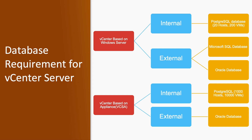Database requirement for vCenter server: vCenter on Windows server has an internal database, or you can also use an external database. The internal database is PostgreSQL, which supports 20 hosts and 200 virtual machines. If you are using an external database, you can use Microsoft SQL or Oracle. For vCenter on Appliance-based, the internal PostgreSQL database supports 1000 hosts and 10,000 virtual machines, and if using an external database, it supports Oracle.